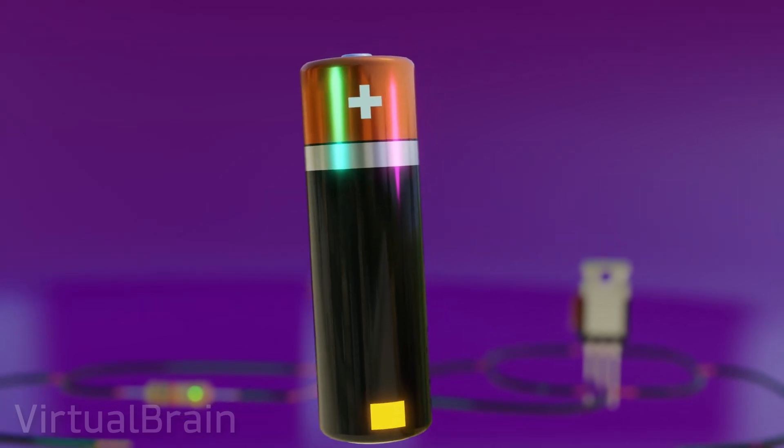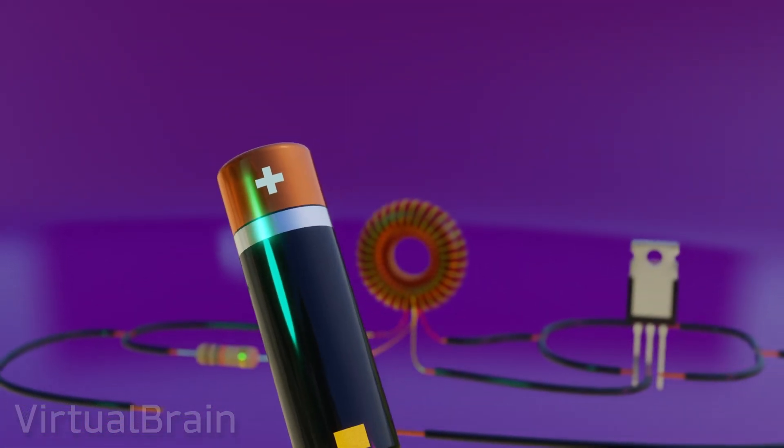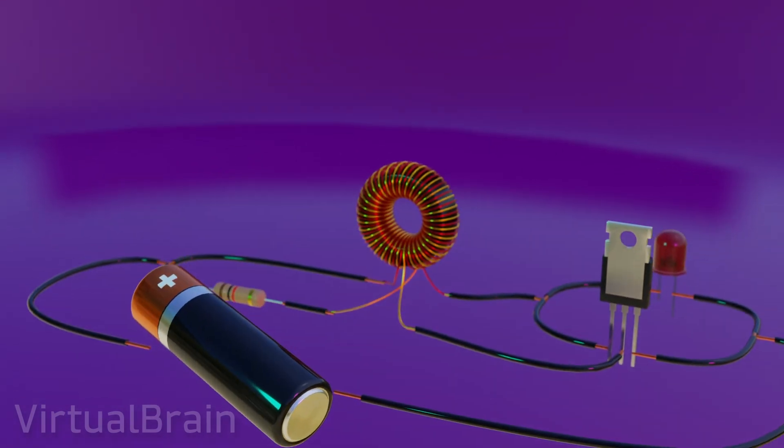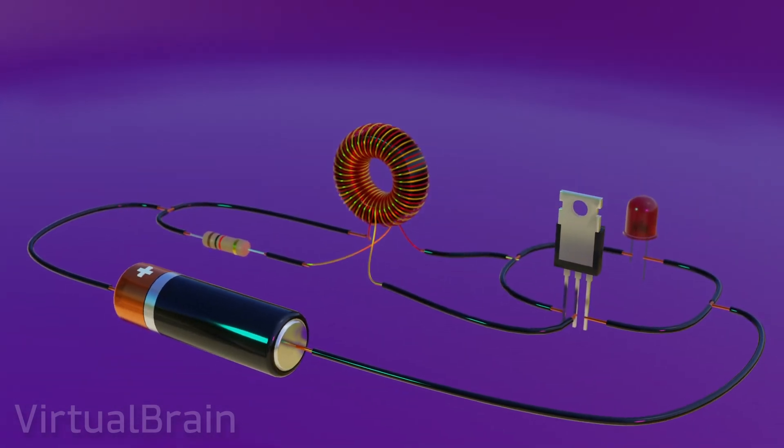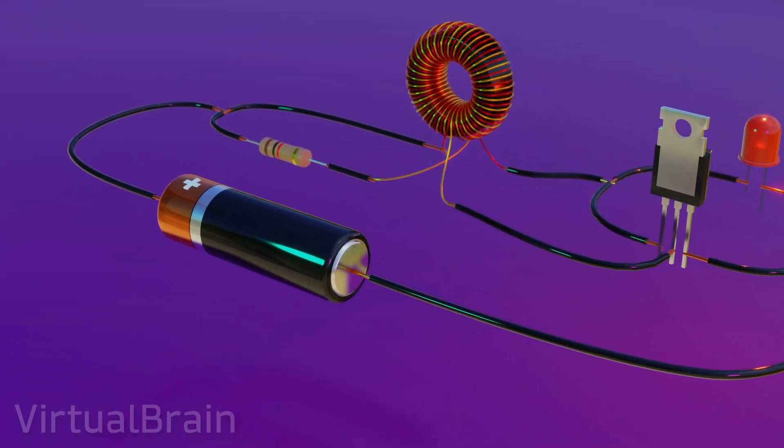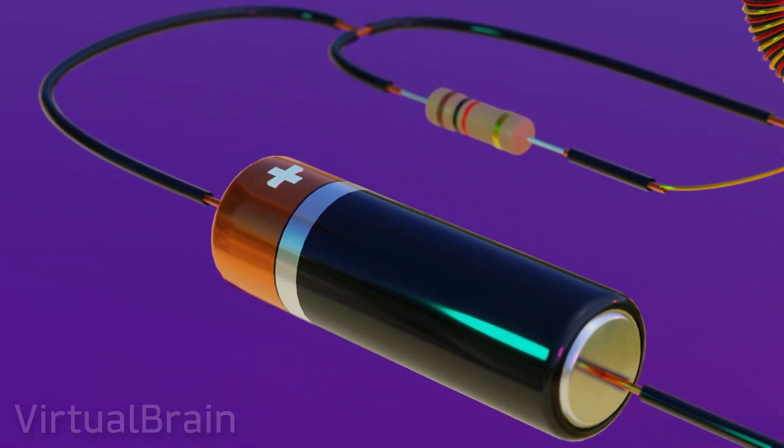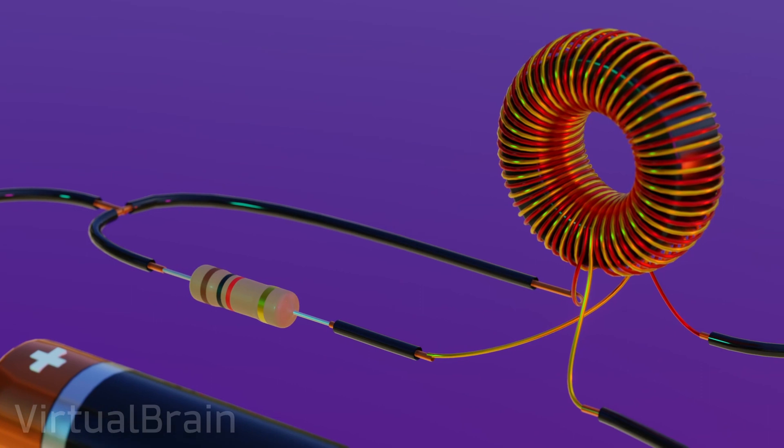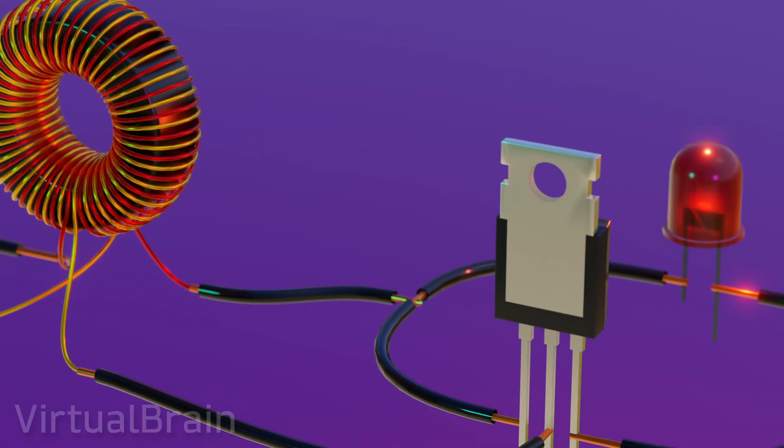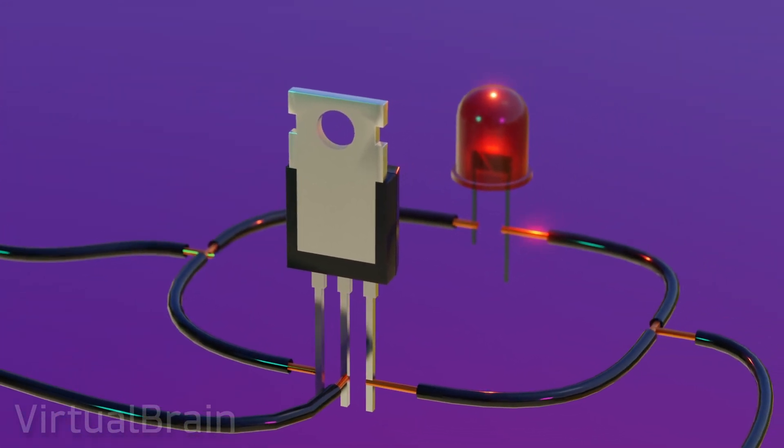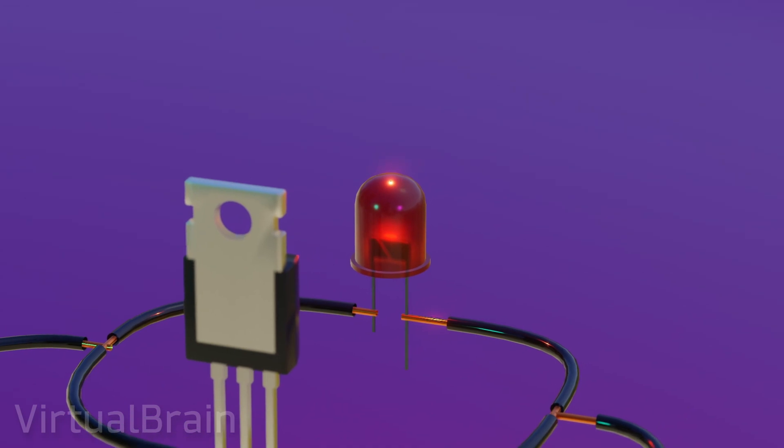There are multiple variations of the Joule Thief as a circuit, but we will focus on one of the simplest, which consists of only five electronic components. A 1.5-volt battery, a resistor, a bifiler toroidal coil, an NPN bipolar junction transistor and an LED that will only light up if its voltage exceeds 1.8 volts.